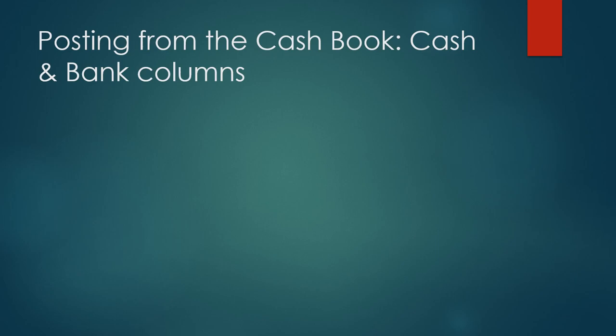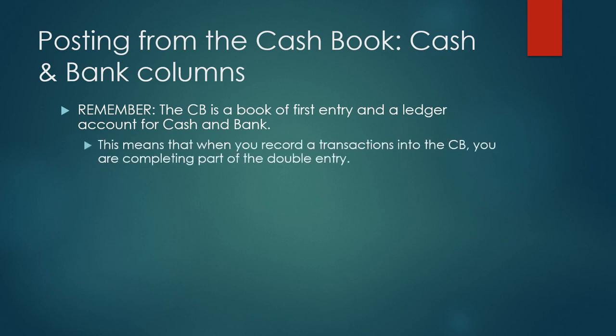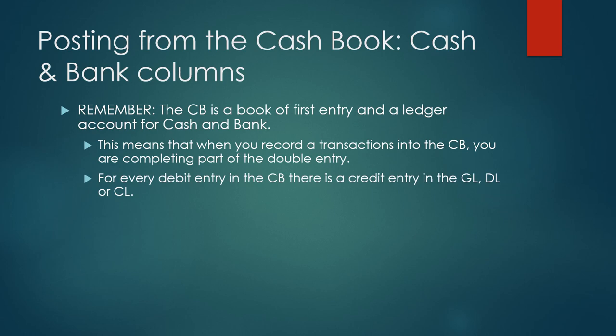We will now look at posting from the cash book, specifically the cash and bank columns. Remember, the cash book is a book of first entry and a ledger account for cash and bank. This means that when you record a transaction into the cash book, you are completing part of the double entry. Therefore, for every debit entry in the cash book, there is a credit entry in the general ledger, debtors ledger or creditors ledger.